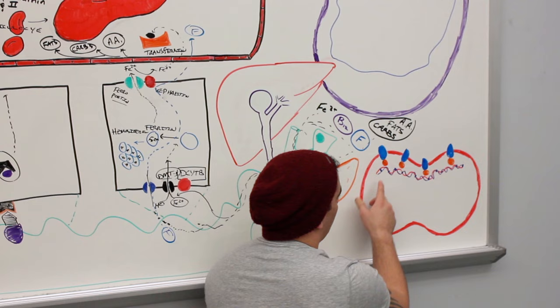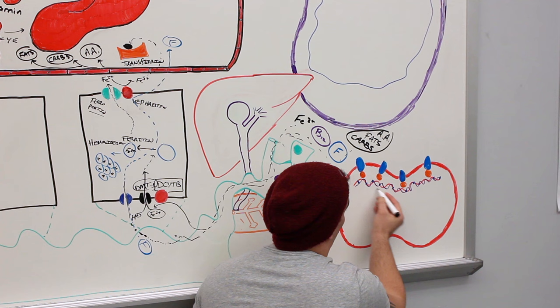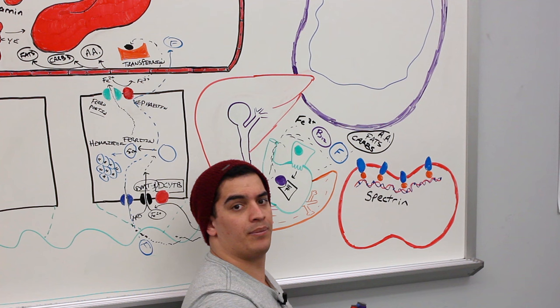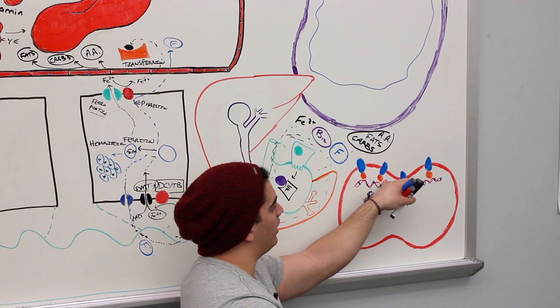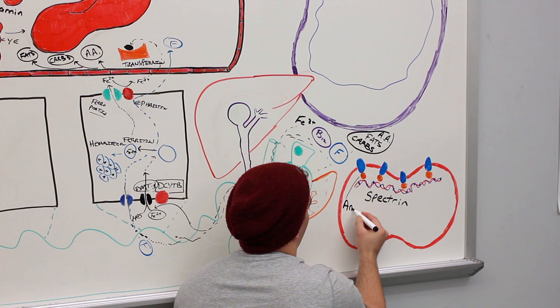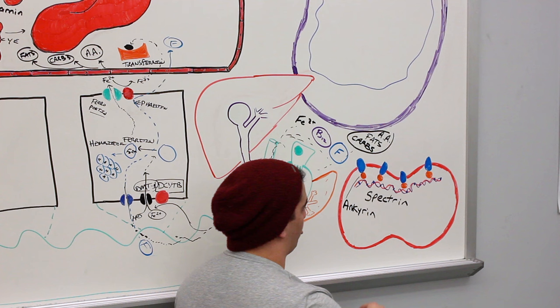Looking at a red blood cell membrane, you can see this webbed protein inside the cell membrane. This protein is called spectrin — super, super important. Another protein — that orange protein binding the spectrin to the cell membrane — is called anchoring. So anchoring is anchoring the spectrin to the cell membrane. We've got spectrin, which is this webbed-like protein, and anchoring, which binds it to the cell membrane.